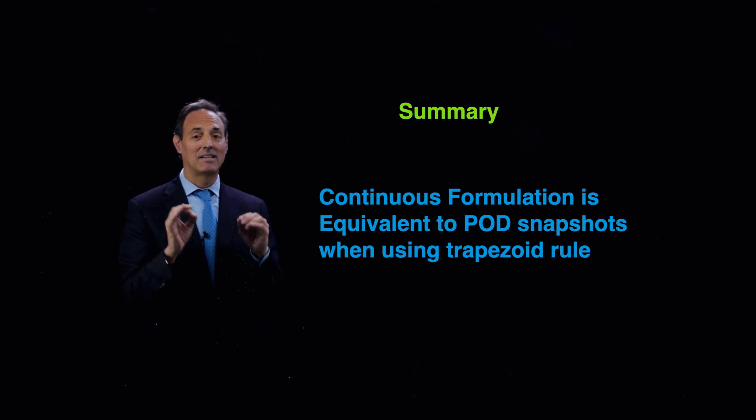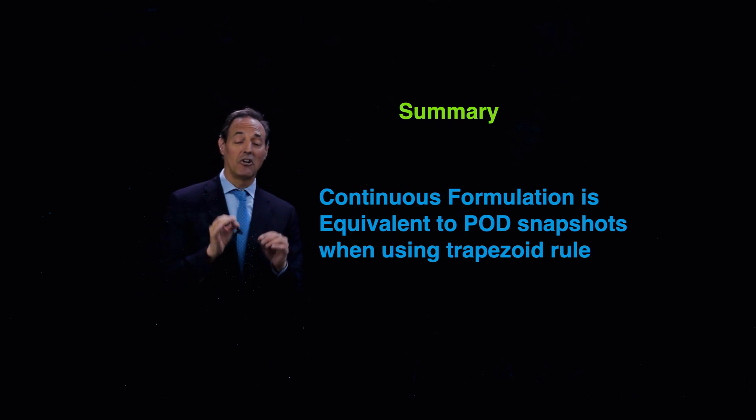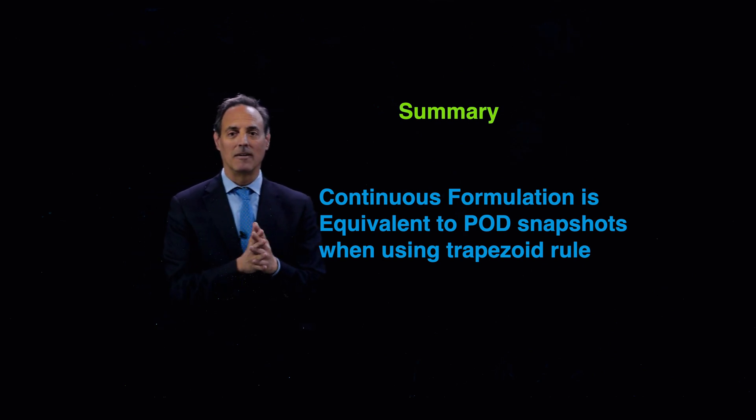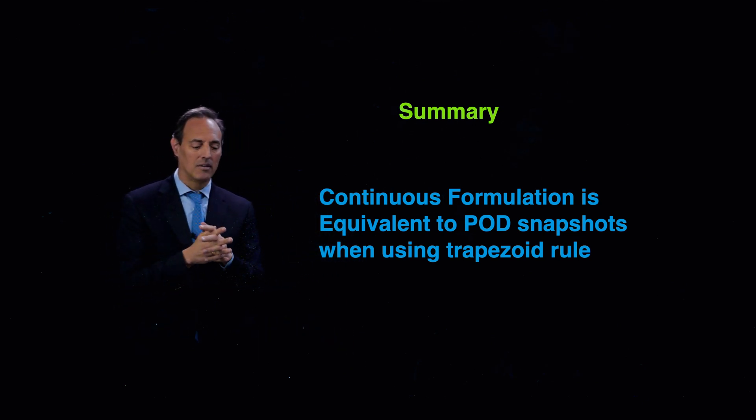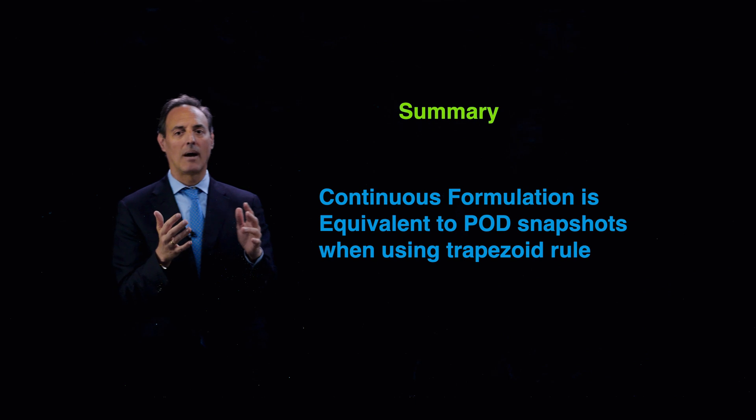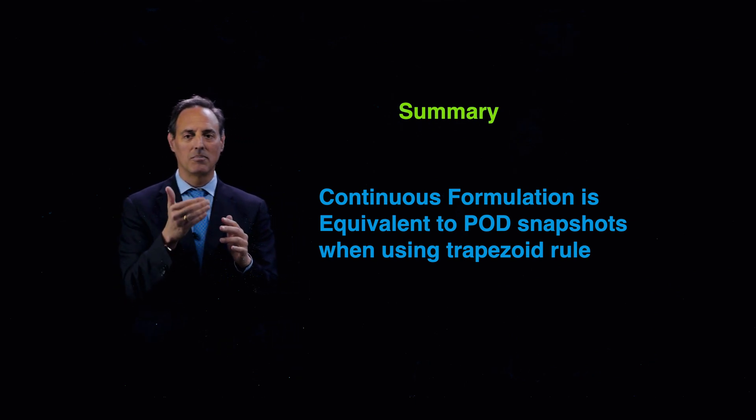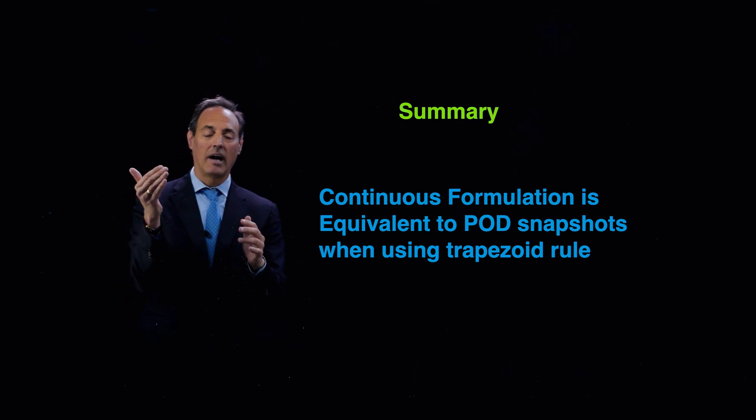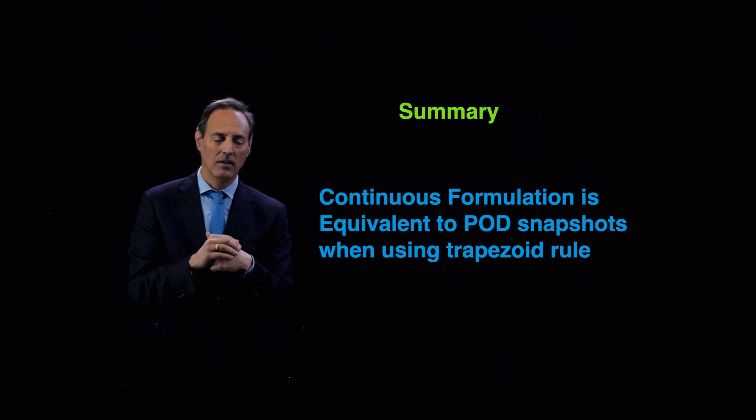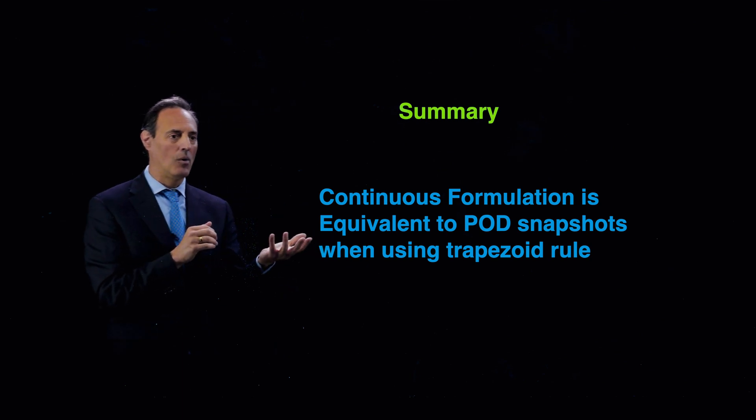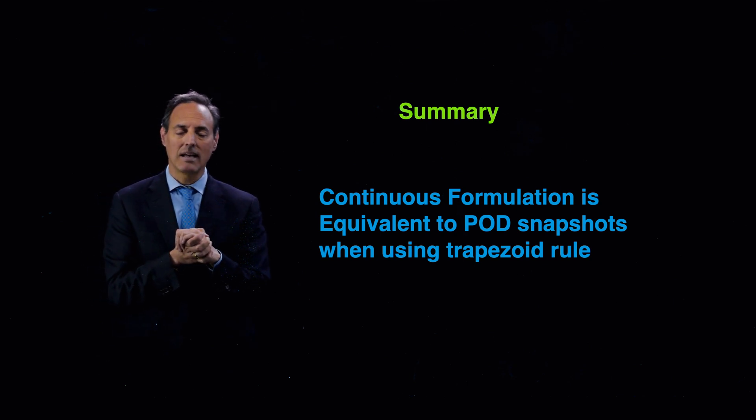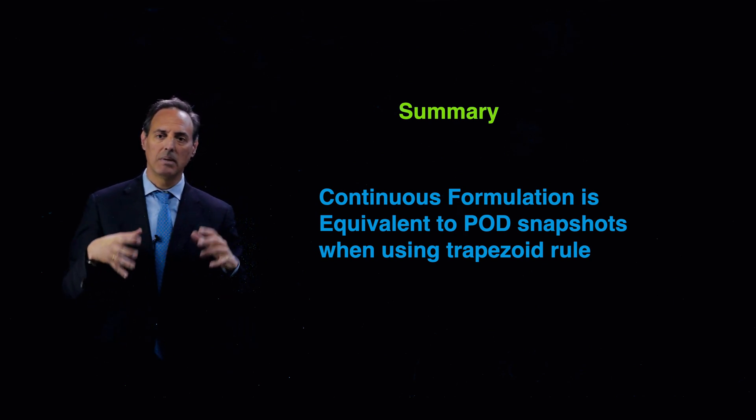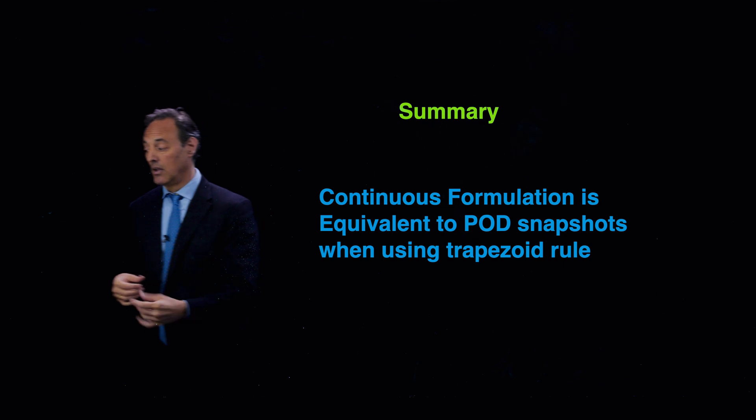Now, which begs the question, there are a lot of interesting and better integration routines. Almost nobody uses trapezoidal rule in practice. You might use Simpson's rule as a base and higher order accuracy schemes from there. So one of the questions you could ask is, what would happen if you use something like Simpson's rule instead of the trapezoid rule? What would that mean and what would be the impact of that?